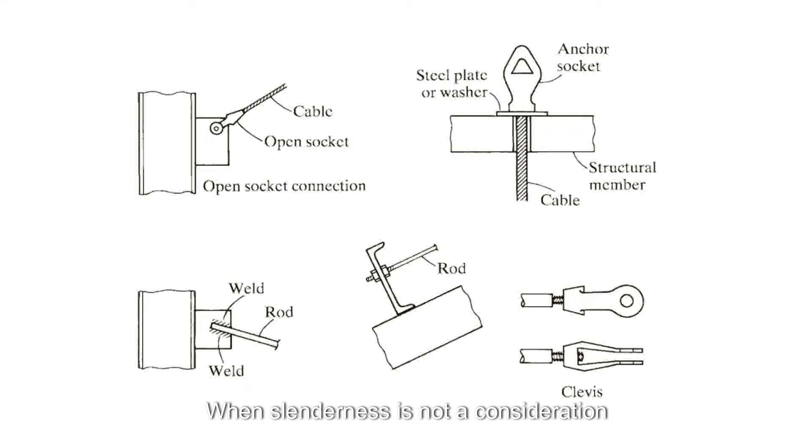When slenderness is not a consideration, rods with circular cross-sections and cables are often used as tension members. The distinction between the two is that rods are solid and cables are made from individual strands wound together in rope-like fashion.